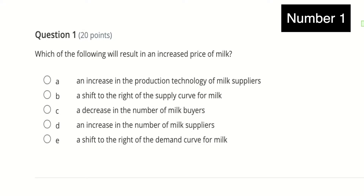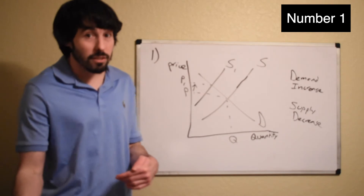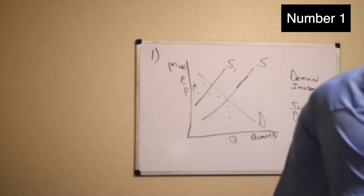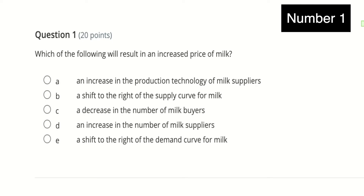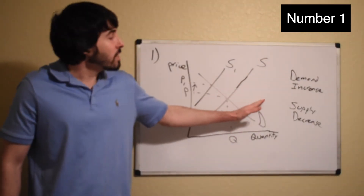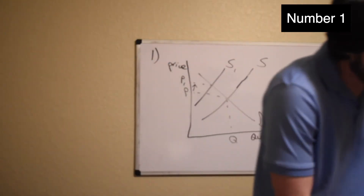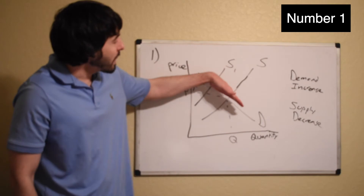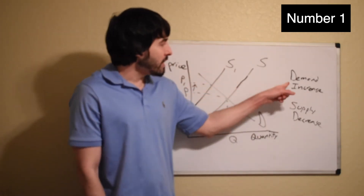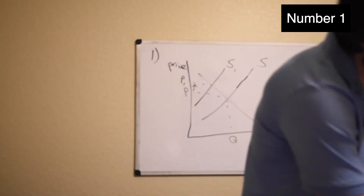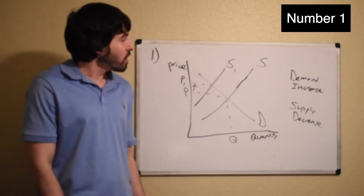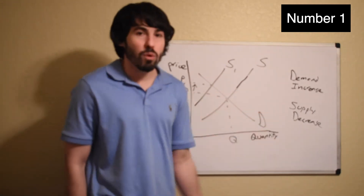Looking at the answer choices: A says an increase in production technology of milk suppliers. Better technology makes it easier to produce milk, causing the supply curve to increase and shift to the right — opposite of what we want, so eliminate A. B says a shift to the right of the supply curve for milk — same issue, that's an increase and we need a decrease, so B is wrong. C says a decrease in the number of milk buyers, which would cause demand to decrease and shift to the left — opposite of what we want. D says an increase in the number of milk suppliers, which would shift supply to the right and increase it — again opposite of what we want.